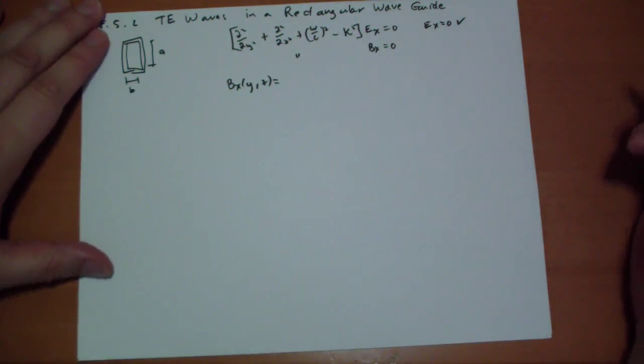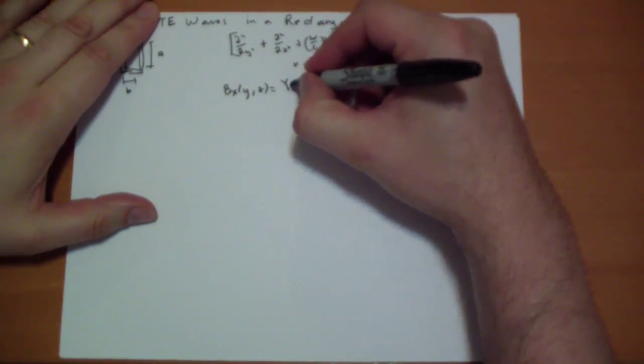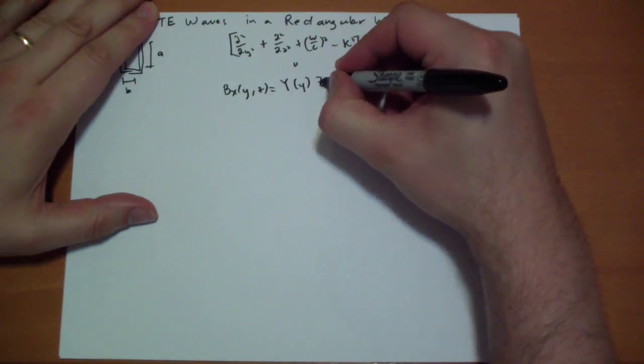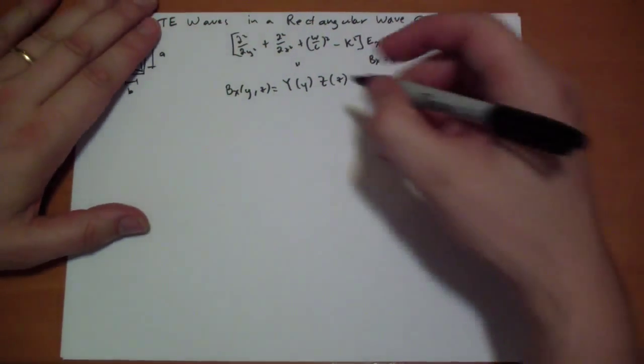And we're going to pull into our physicist handbook of ways to solve complicated equations like these and do separation of variables. So the BX consists of two components Y and Z. Y depends only on Y, Z depends only on Z. They're multiplied together. We might not get a solution that solves everything, but we'll at least get a solution that we can add to a bunch of other solutions and get the final solution just like we did when we were calculating potentials way back, I think, in chapter 4 or 3 or whatever it was.